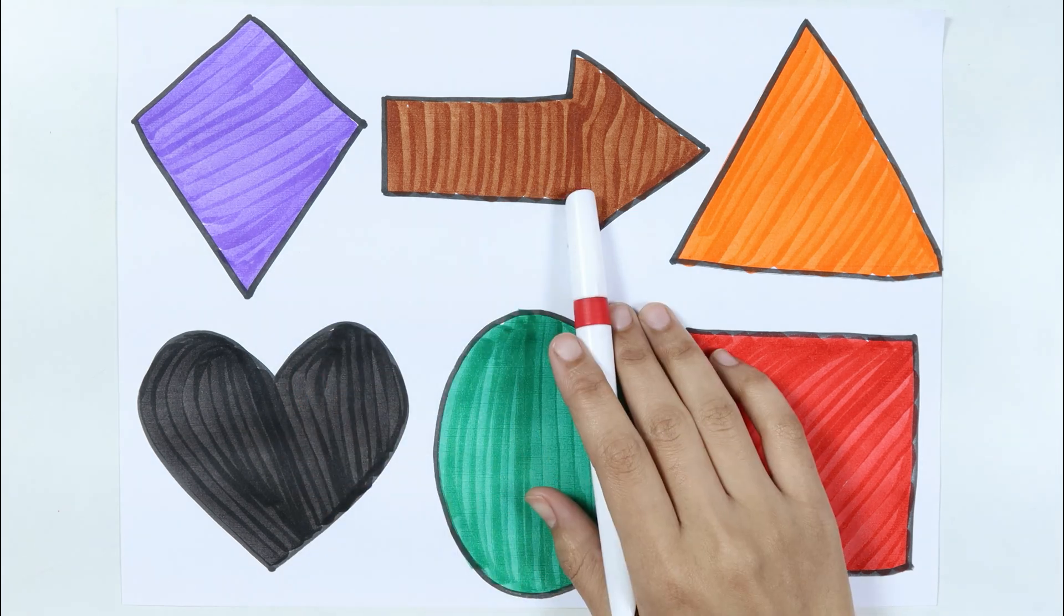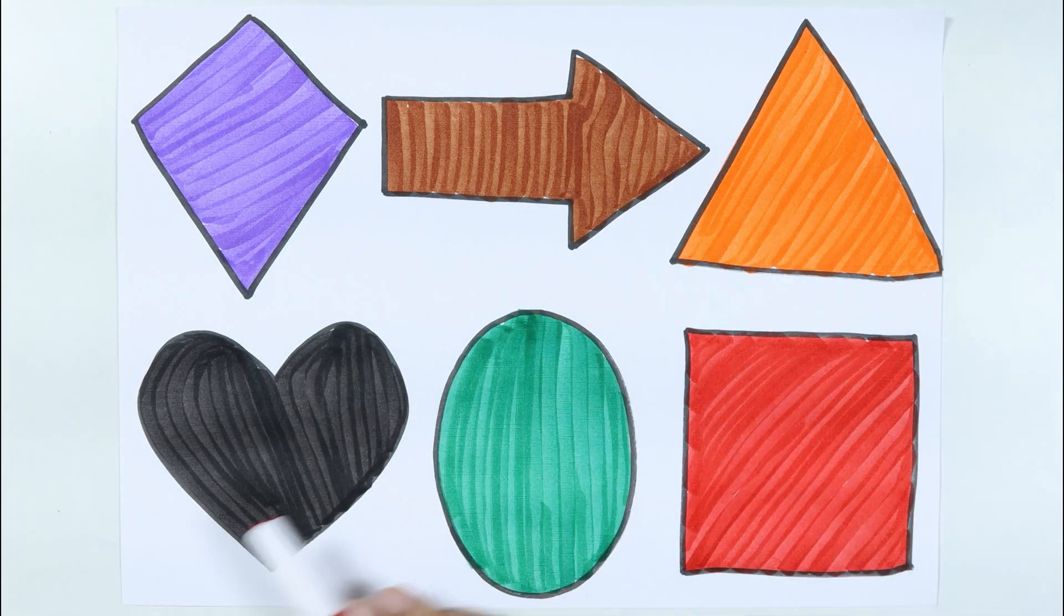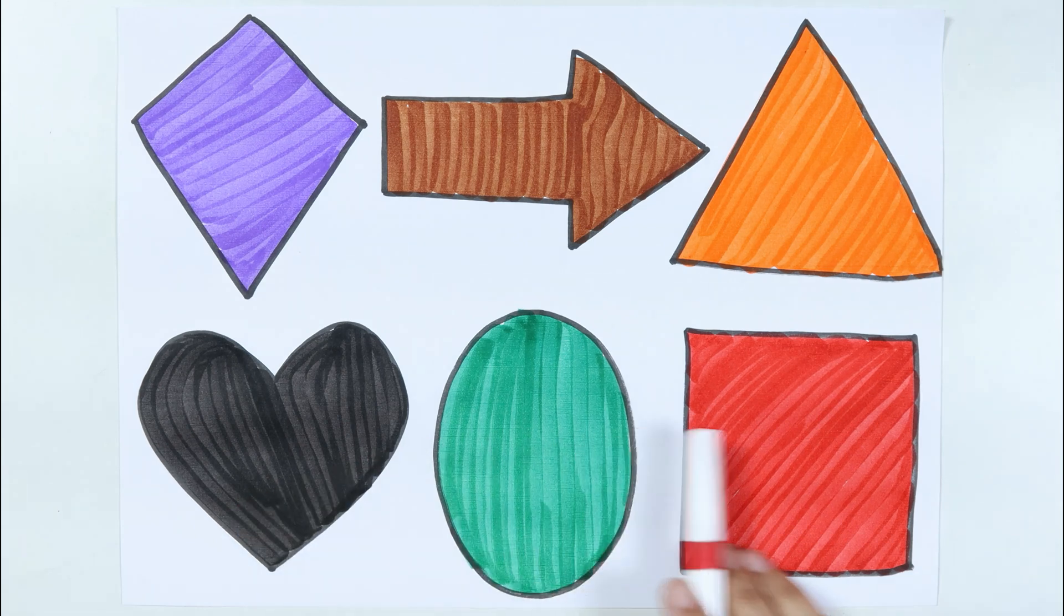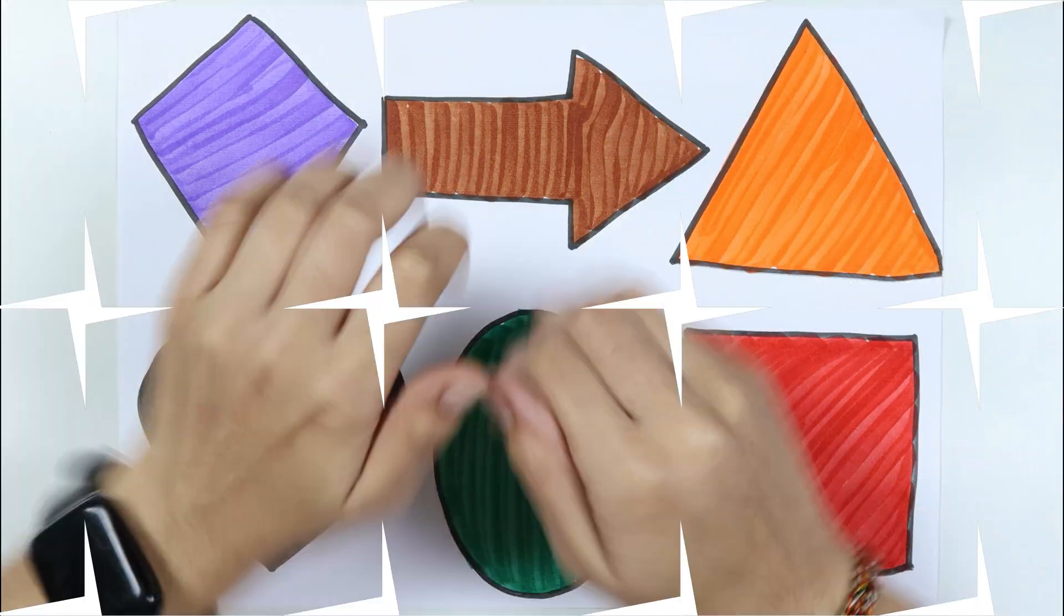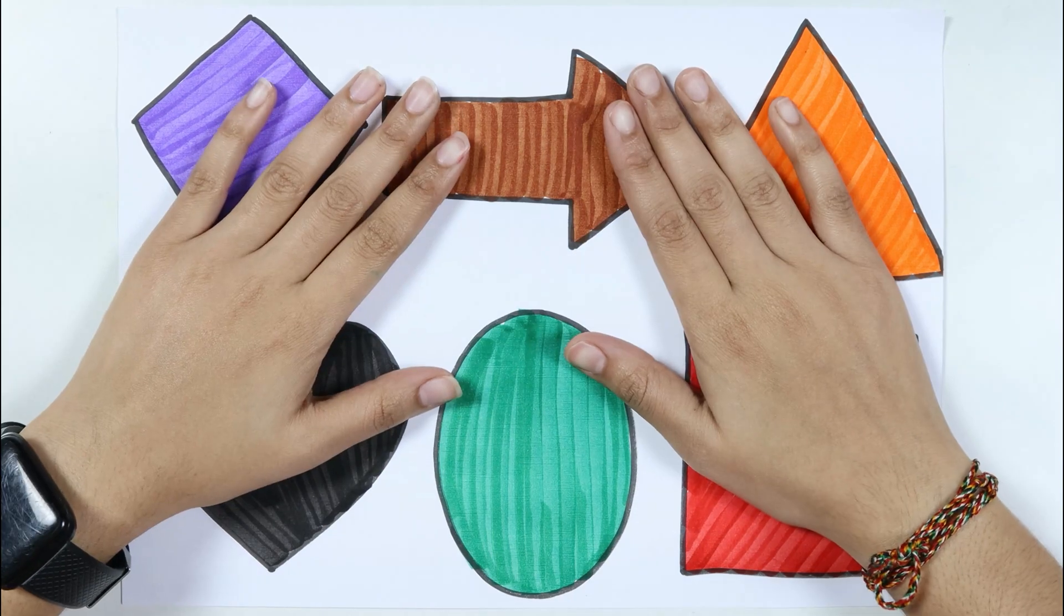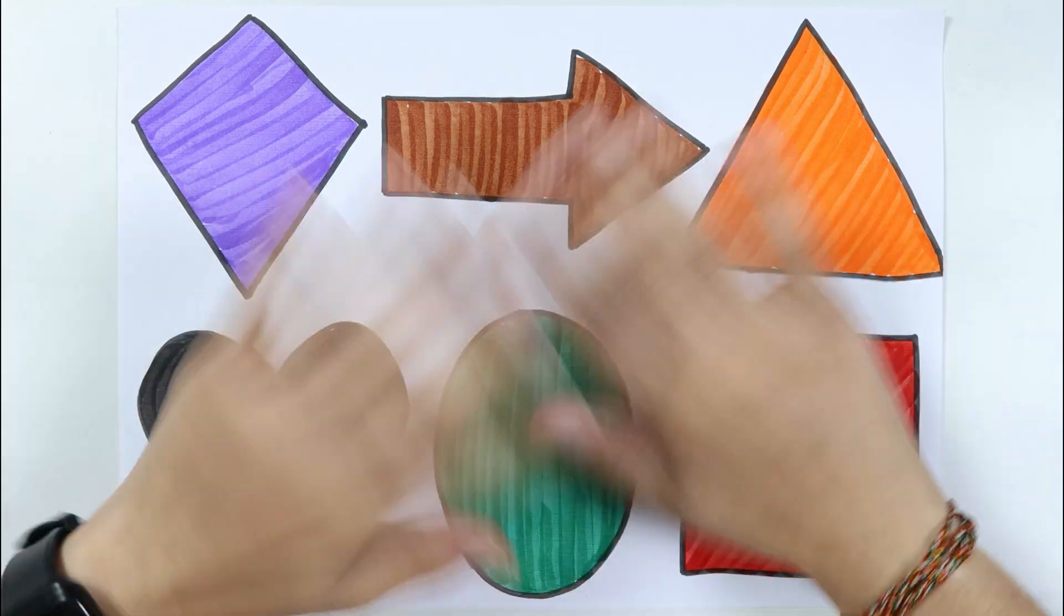Kite, arrow, triangle, heart, oval, square. Thank you for watching my video and don't forget to like and subscribe. Bye bye!